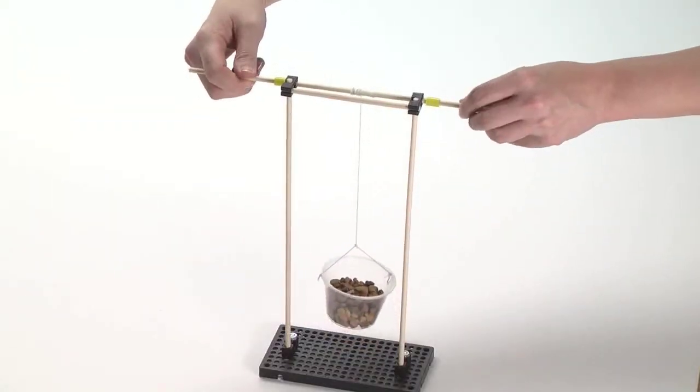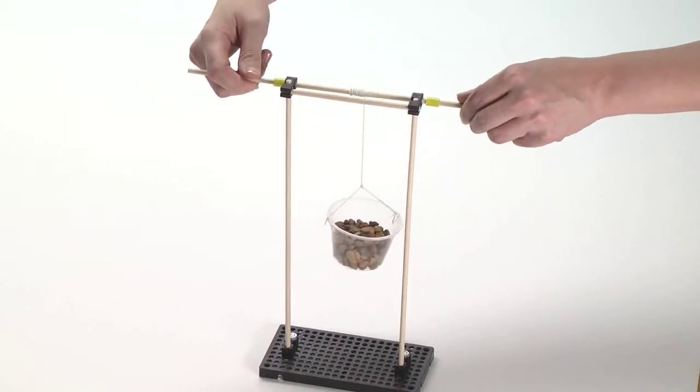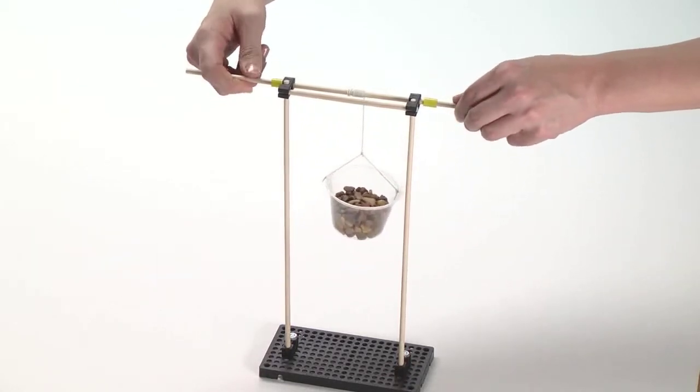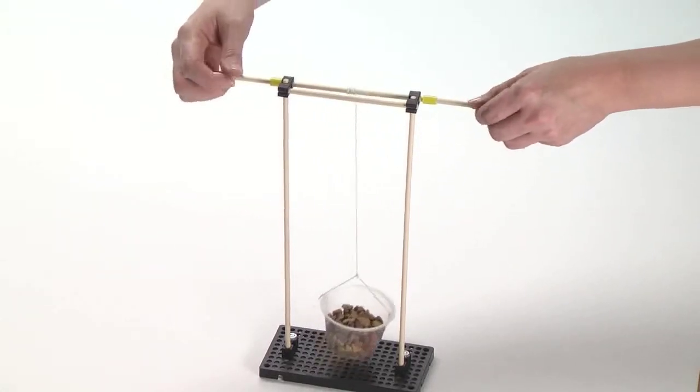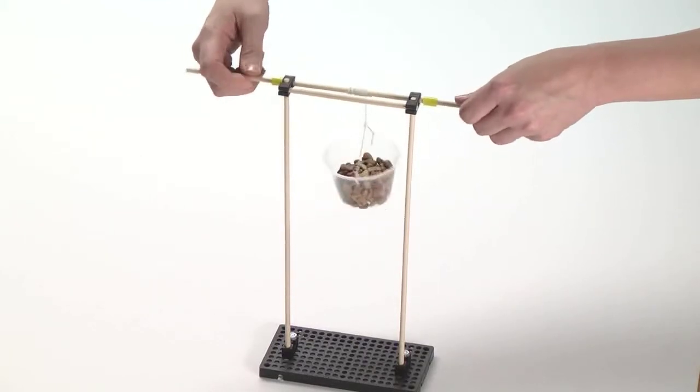When there is a load in the cup, students can turn the axle in their fingers to lift the load. If they do this slowly, and then quickly, they can see the distance the cup is moving is the same, but the torque they need to exert with their fingers is very different.